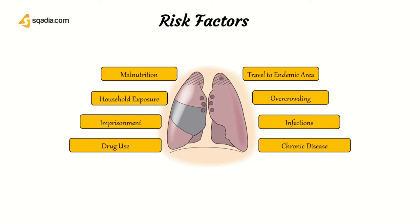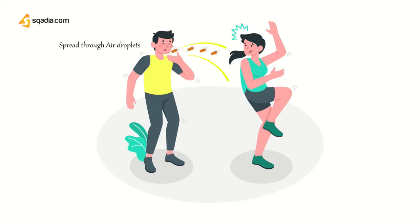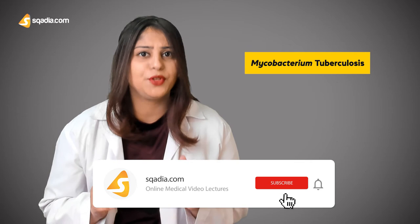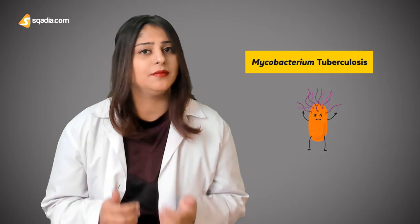Tuberculosis is spread with the help of aerosol droplets. These aerosol droplets are produced when a person coughs or sneezes. Mycobacterium tuberculosis, the causative agent of TB, is a very small organism observable under the microscope. It is a rod-shaped bacteria, also called a bacillus.